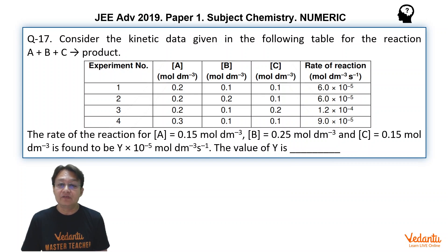And if it is doubled, that means that upon doubling the concentration, the rate is also doubling. That means the order with respect to C is equal to 1.